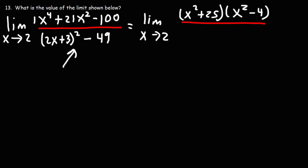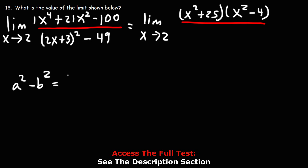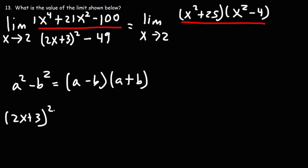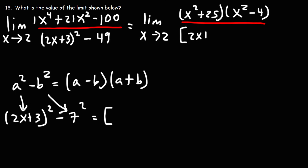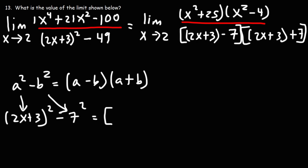On the bottom, notice that we have a difference of two perfect squares. So we could use the formula a squared minus b squared, which equals a minus b times a plus b. Here, a is 2x plus 3. b squared is 49, and the square root of 49 is 7, so b is 7. Therefore we're going to get a minus b: 2x plus 3 minus 7, times a plus b: 2x plus 3 plus 7. That's how we factor that expression.